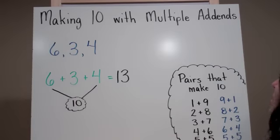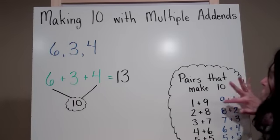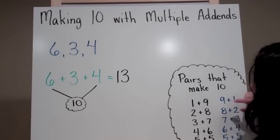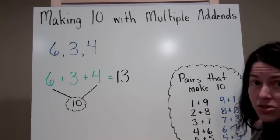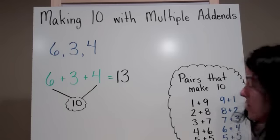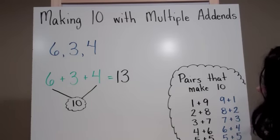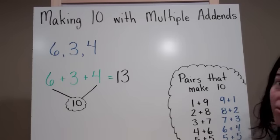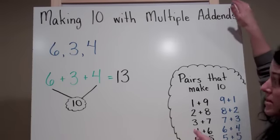Remember, here are our pairs that make 10. We have 1 plus 9, which can also look like 9 plus 1. 2 plus 8 or 8 plus 2. 3 plus 7 or 7 plus 3. 4 plus 6, also 6 plus 4. And 5 plus 5. Written either way, it's the same two numbers.